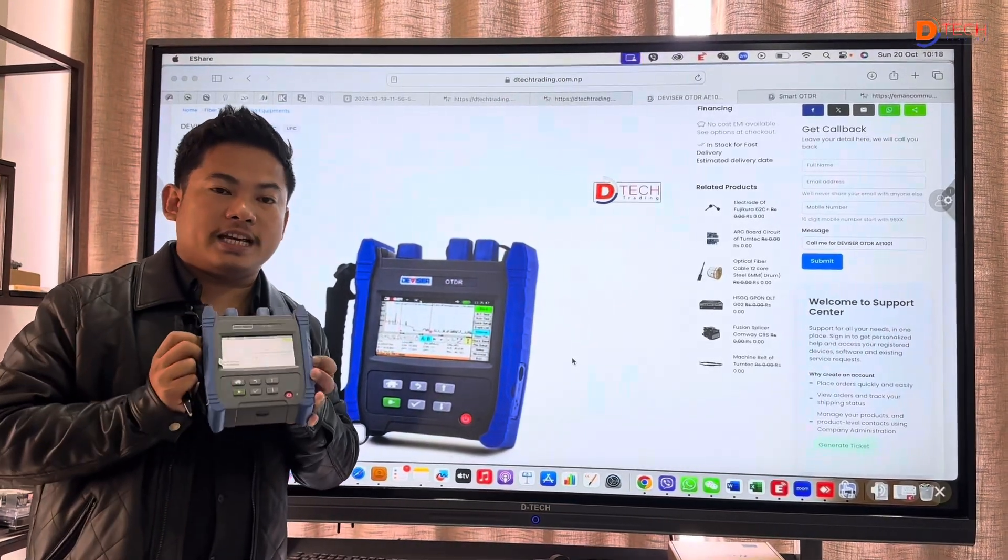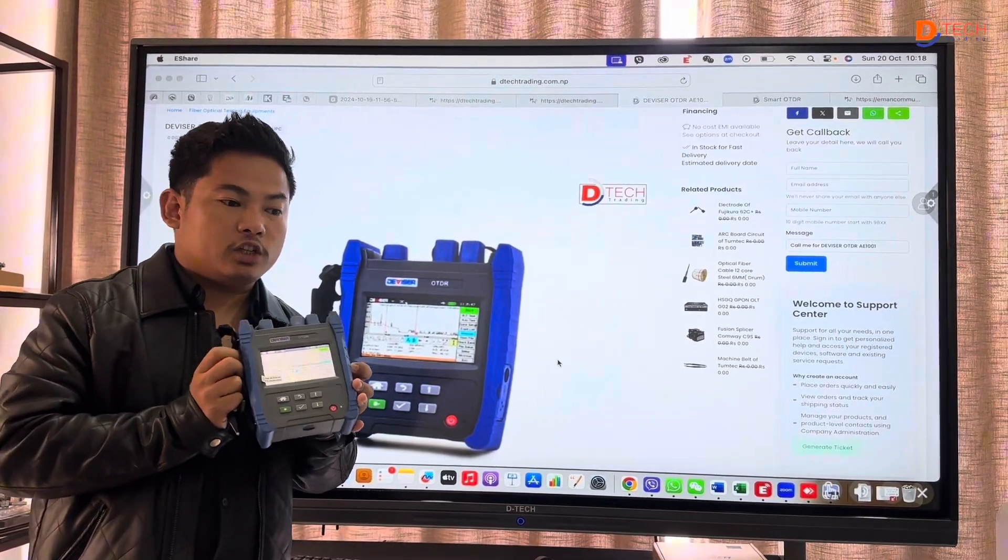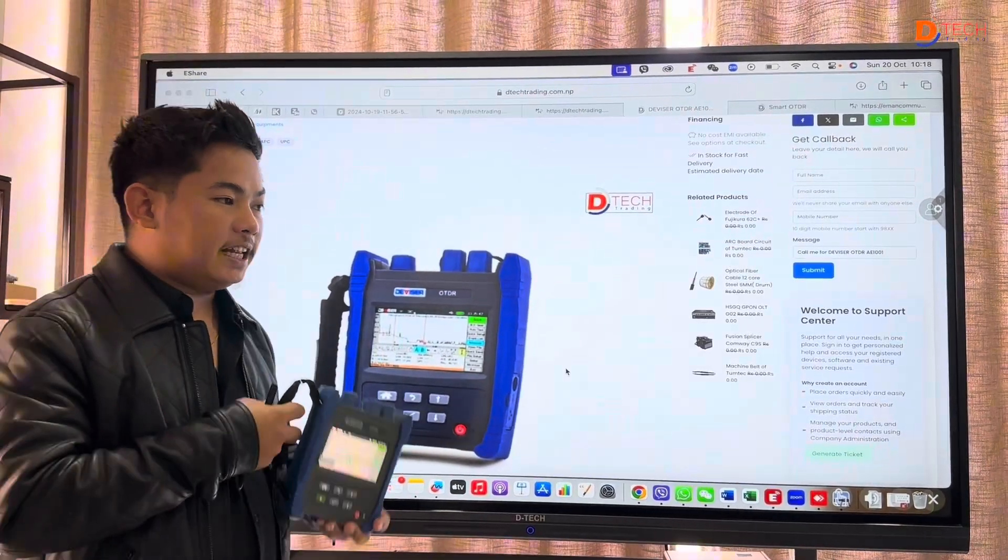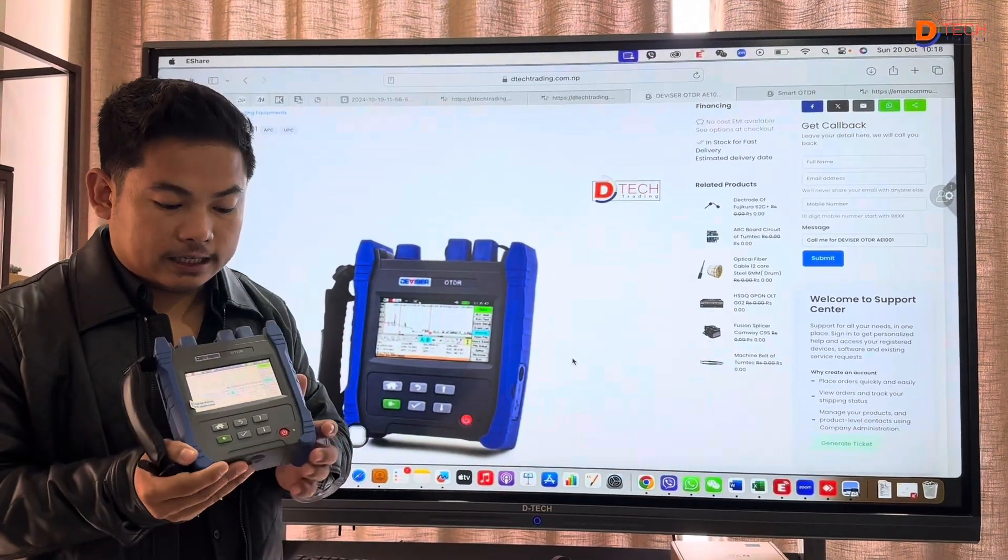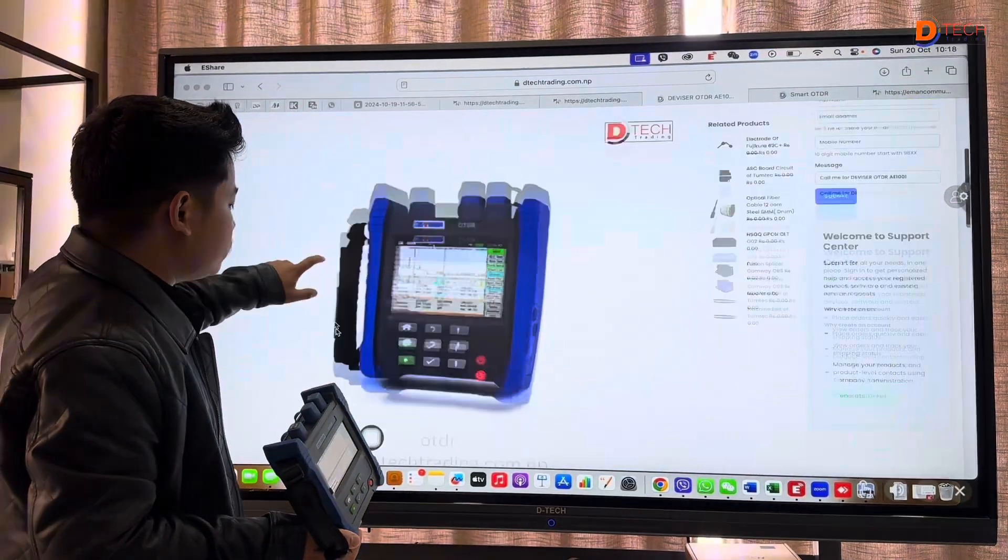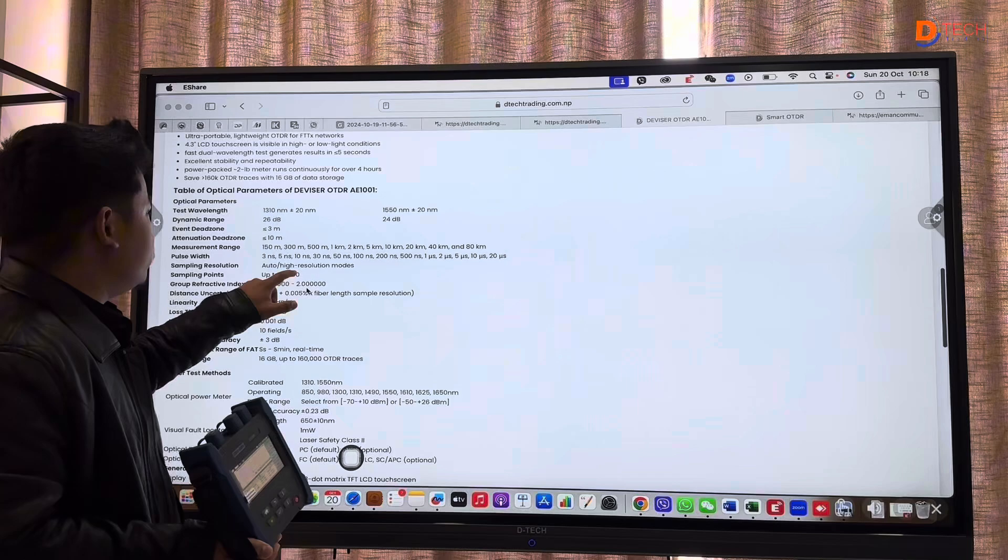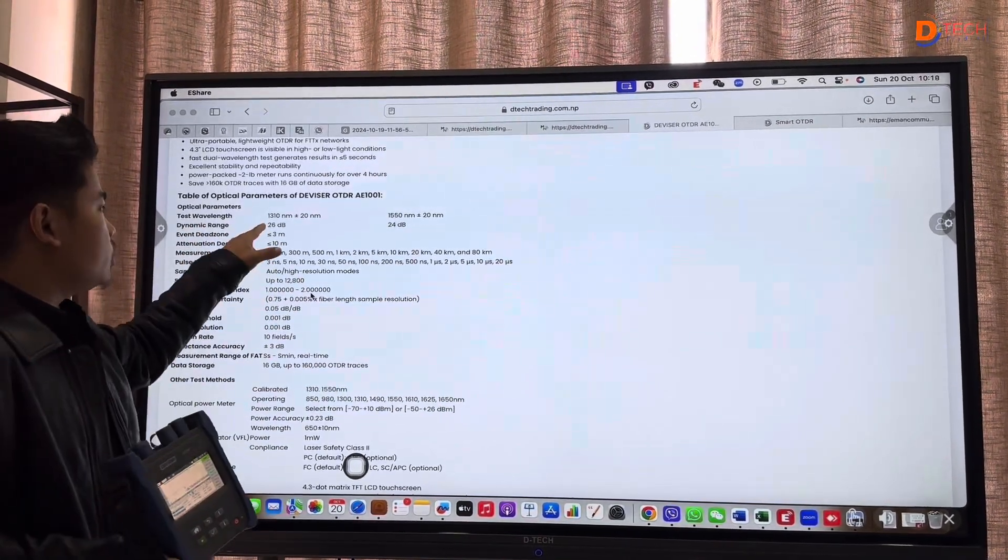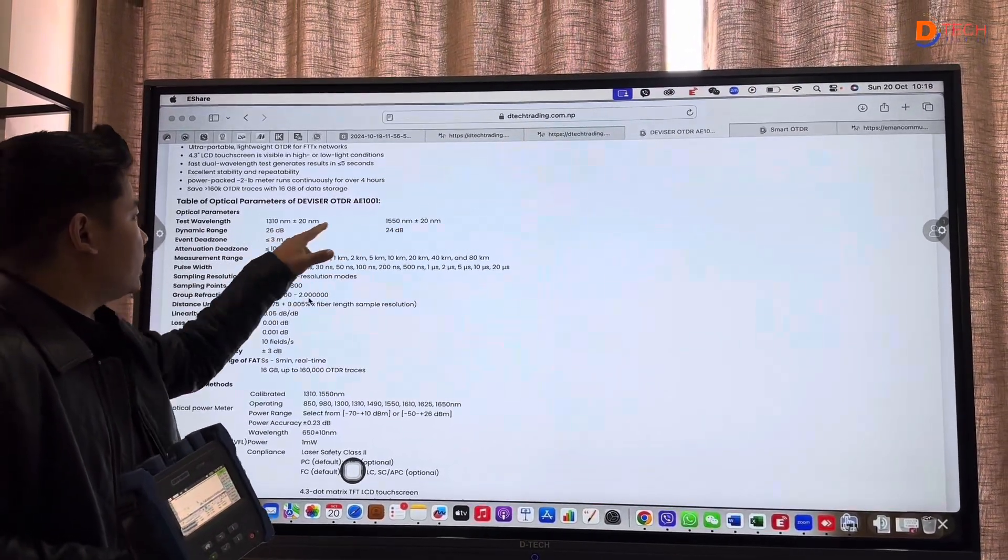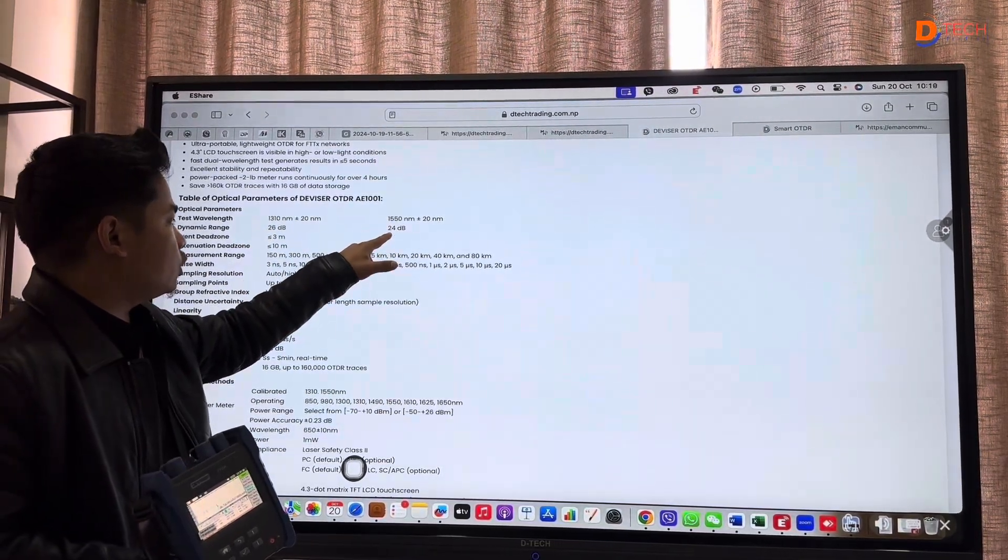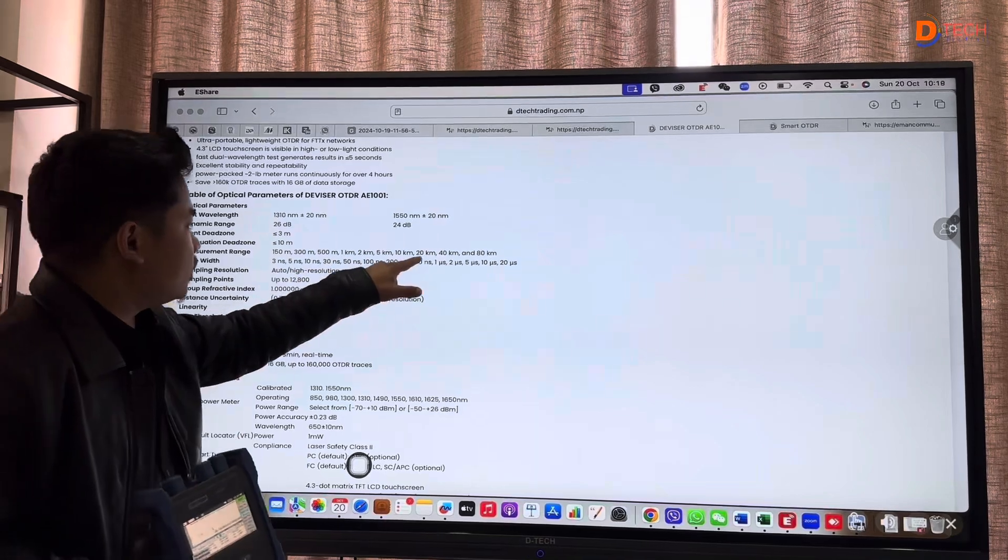Hello everyone, I am going to demonstrate the OTDR for you. The dynamic range represents the total loss that can be measured. For this model, the total distance is 80 kilometers.